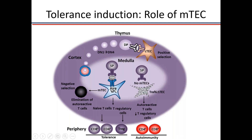Once T cells come to the medulla, the most important cells for tolerance are the medullary thymic epithelial cells, which express self-antigens. The thymus is small — how does it express all self-antigens present in the kidney, brain, liver, and islet cells? This is explained by the AIRE gene, a transcription factor that binds DNA and causes production of a large variety of proteins present in different organs. Those proteins are produced by medullary thymic epithelial cells, presented to T cells, and if a T cell binds them with very high affinity, that T cell will die and not enter the periphery.